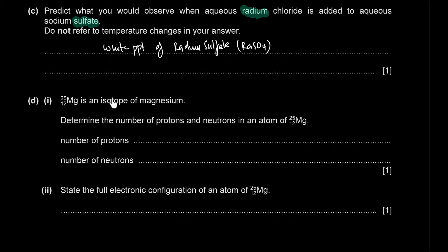Magnesium-25 is an isotope of magnesium with atomic number 12, so there are 12 protons. The nucleon number is 25, giving 25 − 12 = 13 neutrons. The full electronic configuration of magnesium-25 is 1s2, 2s2, 2p6, 3s2, since magnesium is in Group 2, Period 3.